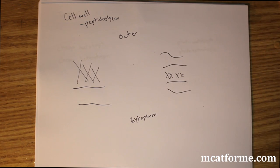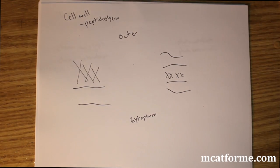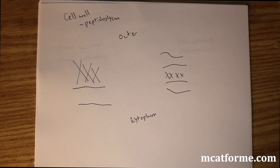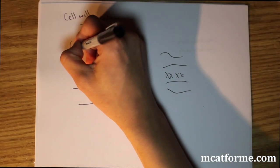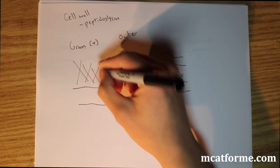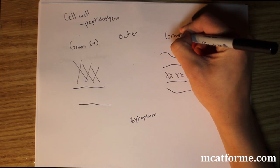So we have two different drawings right here. One is something called gram positive and one is gram negative. Gram positive has a very thick peptidoglycan layer and gram negative has a very thin one. This is gram positive, that thick layer of peptidoglycan, and this is gram negative.